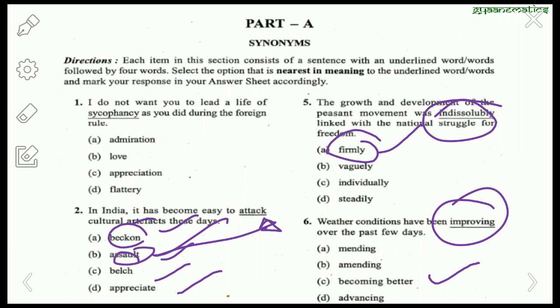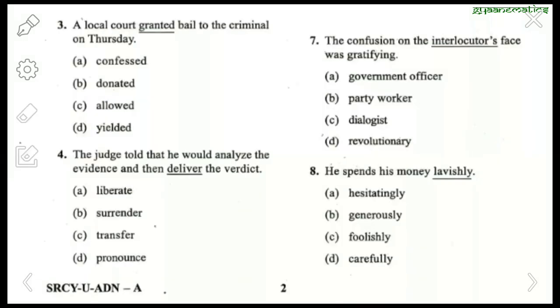Amending means to repair or change something in paperwork, like amending articles in the Constitution. Advancing means to move forward. Next: 'A local court granted bail to the criminal on Thursday.' Granted can be replaced by allowed — allowed is the synonym of granted.